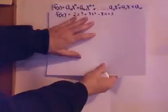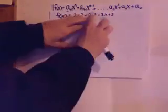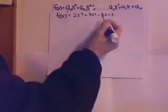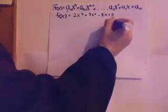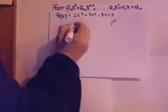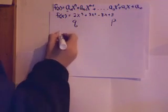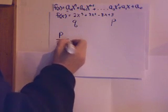Suppose I have this polynomial here: f of x equals 2x to the third plus 3x squared minus 8x plus 3. The p is 3 and the q is 2. So I have to do p over q, all the factors.